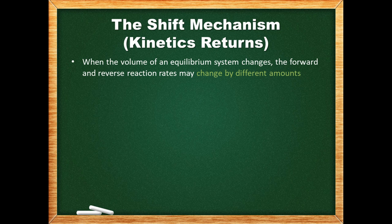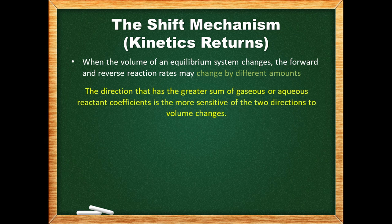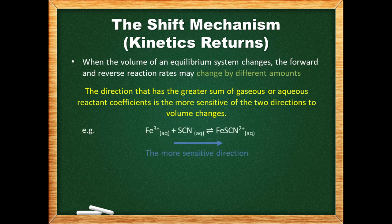When the volume of an equilibrium system changes, all the reactant and product concentrations change proportionately. Nevertheless, the forward and reverse reaction rates may change by different amounts and become unequal. The direction — forward or reverse — that has the greater sum of gaseous or aqueous reaction coefficients is more sensitive to volume changes. For example, if volume increases, that more sensitive direction will experience a greater increase in rate.